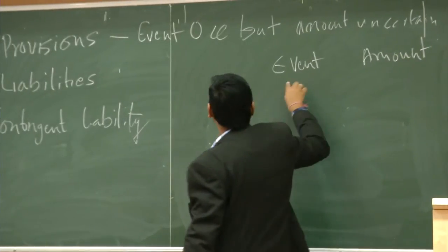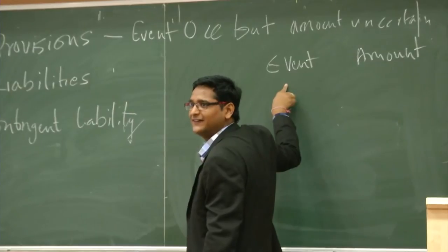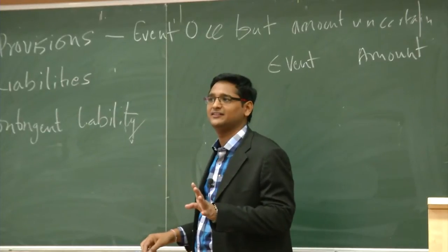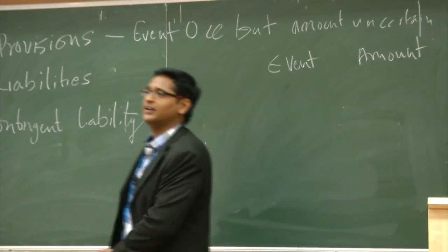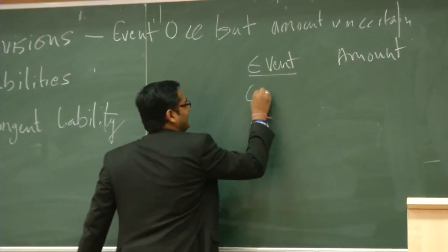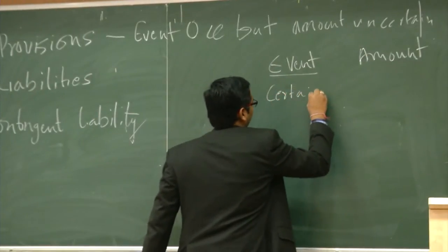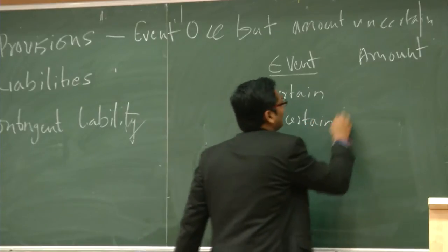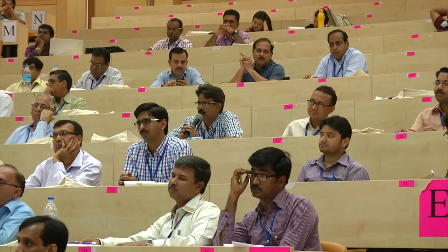In contingent liability, is the event certain or uncertain? The event is there — it may or may not happen. Event may be certain or uncertain. But what about the amount? Totally uncertain — this cannot be estimated at all.